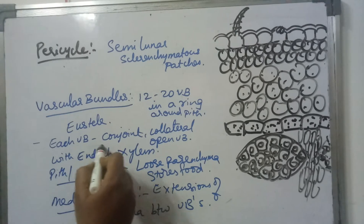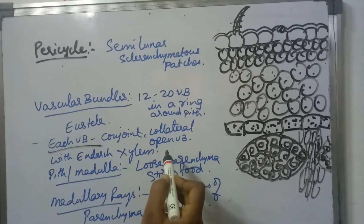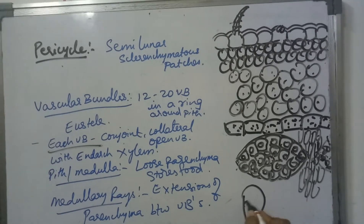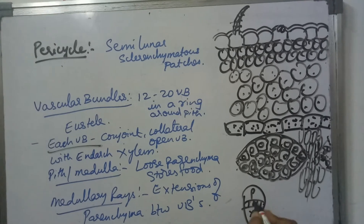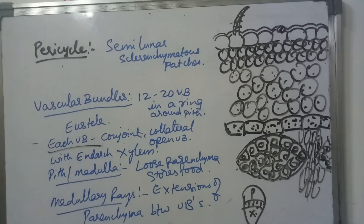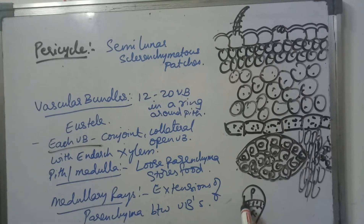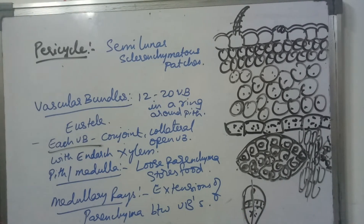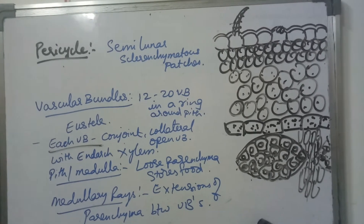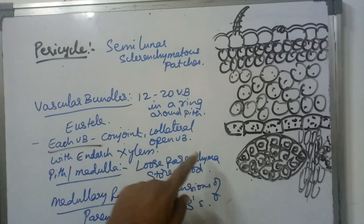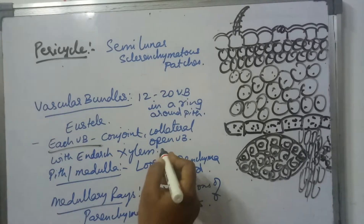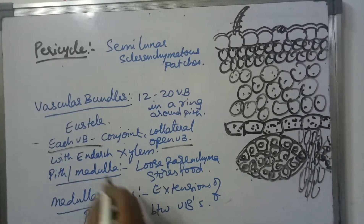Each vascular bundle in dicot stem is conjoint, collateral, and open type. Conjoint means xylem and phloem form one bundle. Collateral means they lie on the same radius. Open means cambium (KMM) is present in between xylem and phloem.